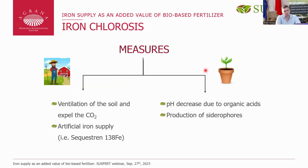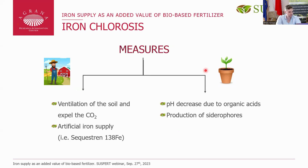What can the farmer do? The farmer can, for example, ventilate the soil and expel CO2 by plowing it, thereby reducing the buffering effect of the bicarbonates. Or you can use artificial iron supply in the form of EDTA — in essence, it is like a Sequestrene 138.